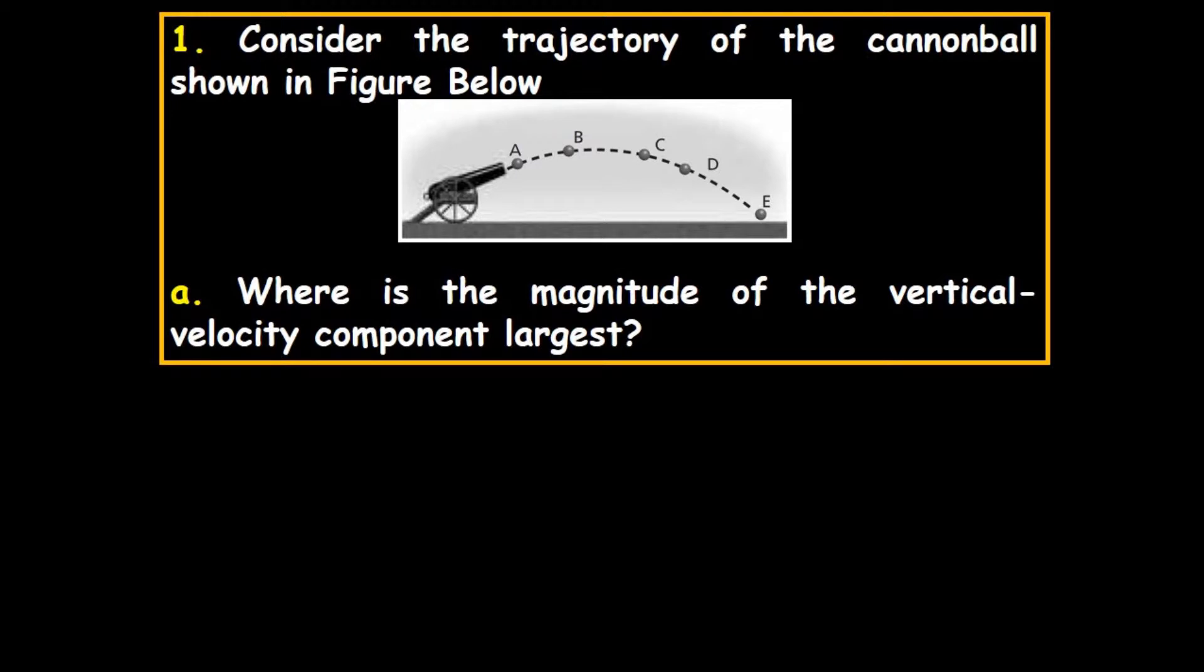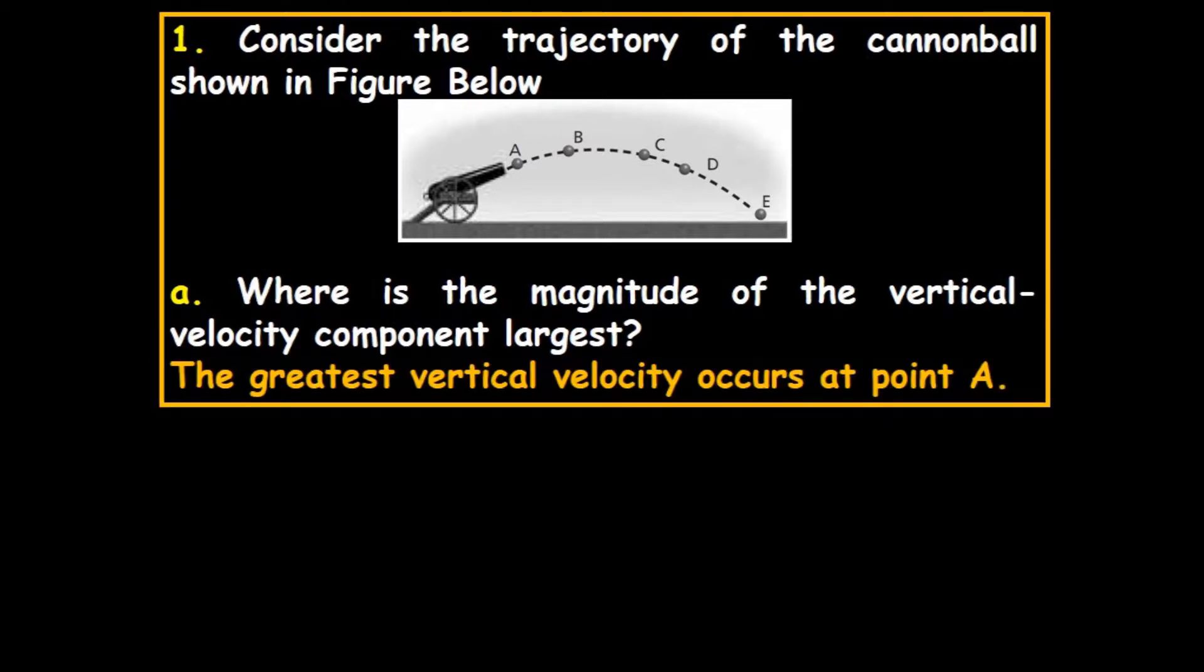Consider the trajectory, the path of a cannonball shown in figure A. Where is the magnitude of the vertical velocity component the largest? The greatest vertical velocity will be at the muzzle. That's going to be point A, it's called the muzzle velocity.